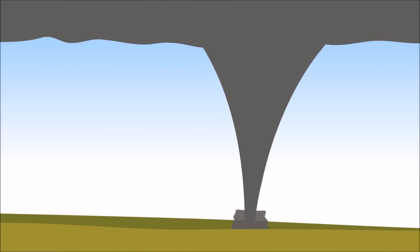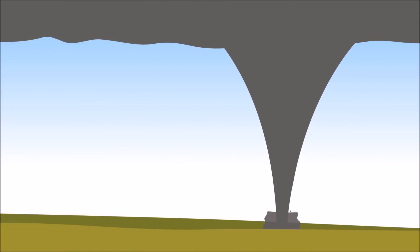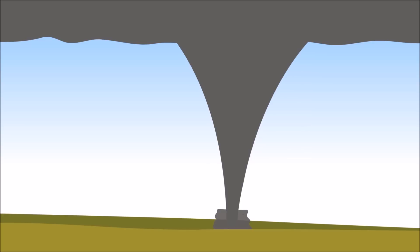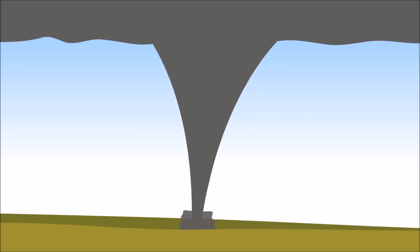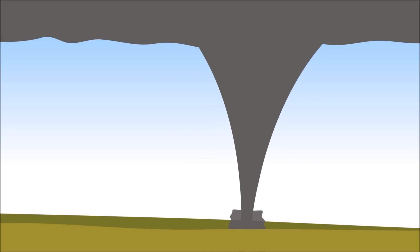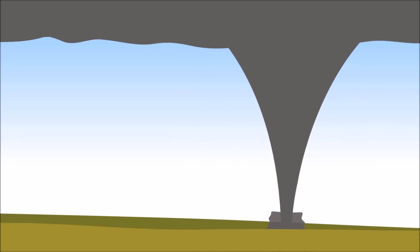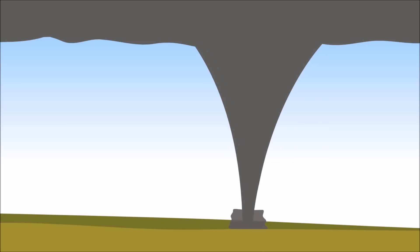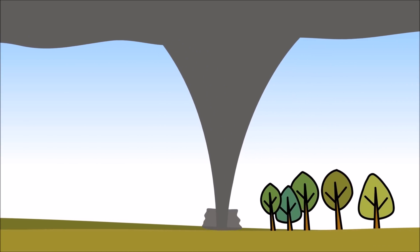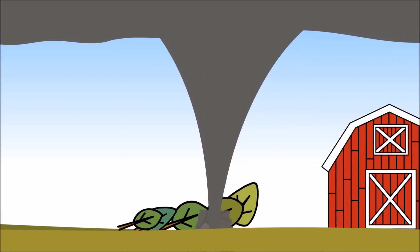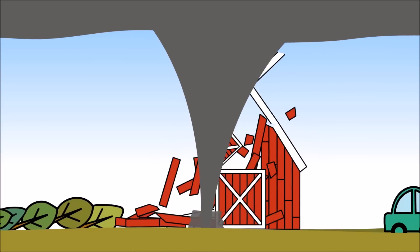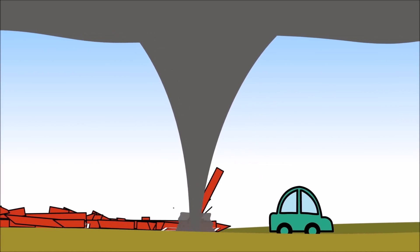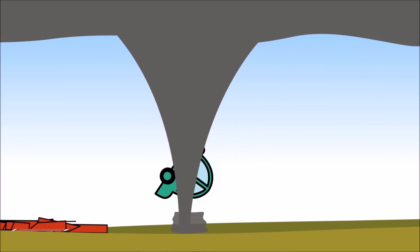Tornadoes are one of the most powerful and violent weather events. Tornadoes are tubes of air that spin rapidly. They are connected to clouds and touch the ground. They are very dangerous because of their high wind speeds, so high that they can knock down trees, destroy buildings, and even toss cars up into the air!